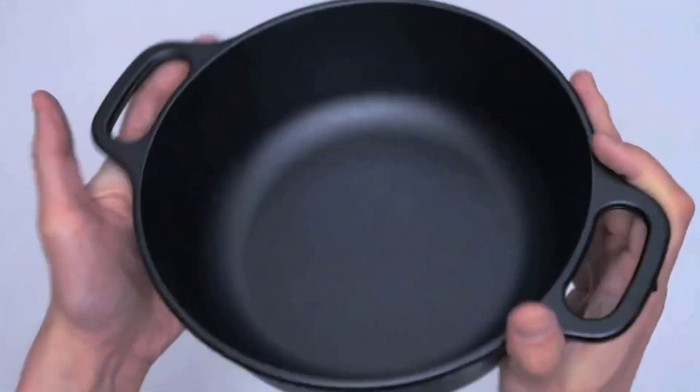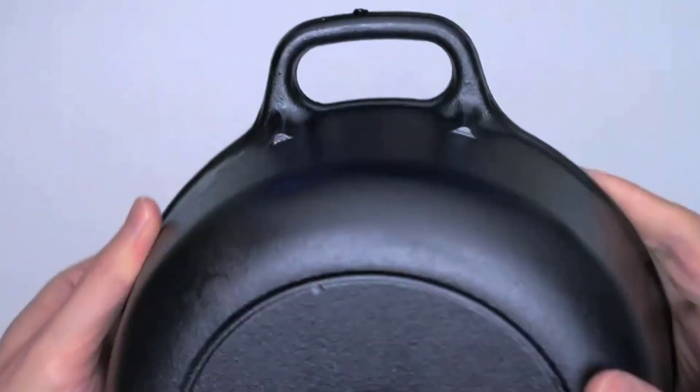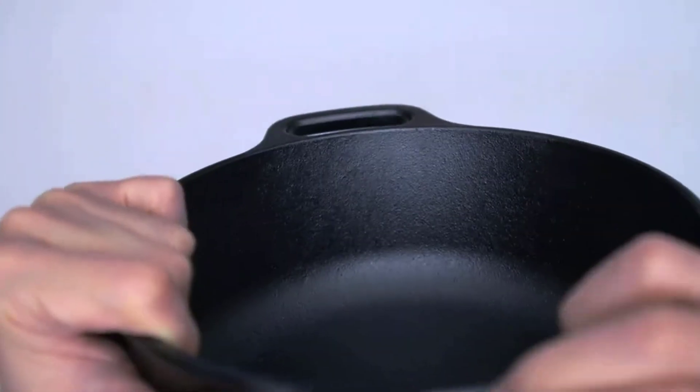The pre-seasoning of the cast iron serves as a non-stick surface, making it easy to serve and clean up afterward. The food effortlessly releases from the pot without any sticking, and the cleanup is a breeze.